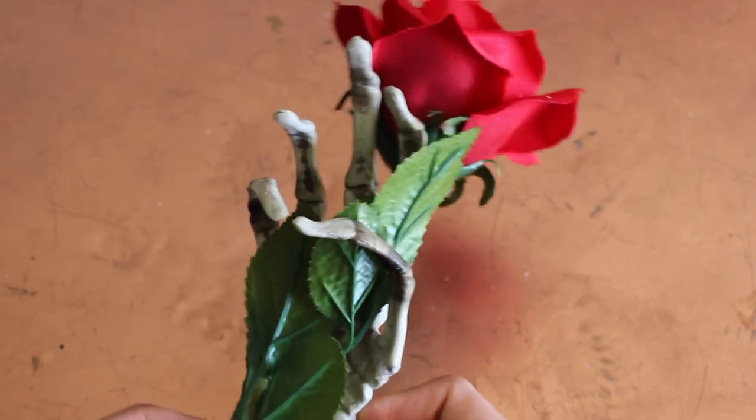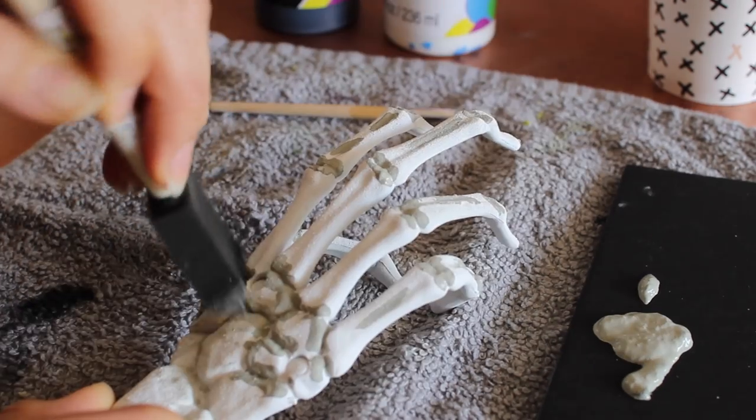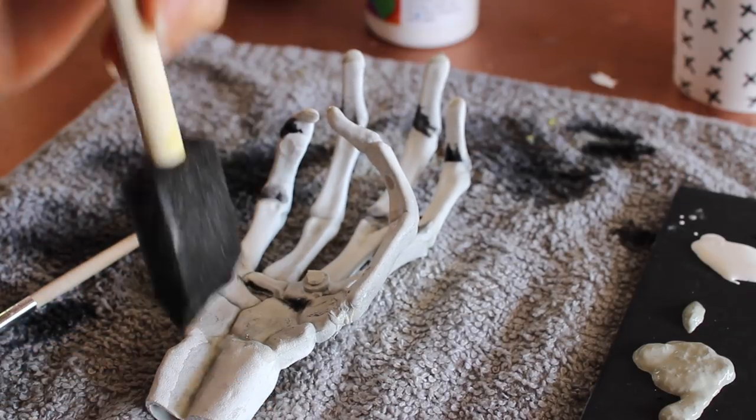Once I got the hand how I liked it, I just went ahead and spray painted it and distressed it the same way I did the DIY skull sconce, which you can watch for more detail on how I added the grays and the blacks and some water to make it look awesome.